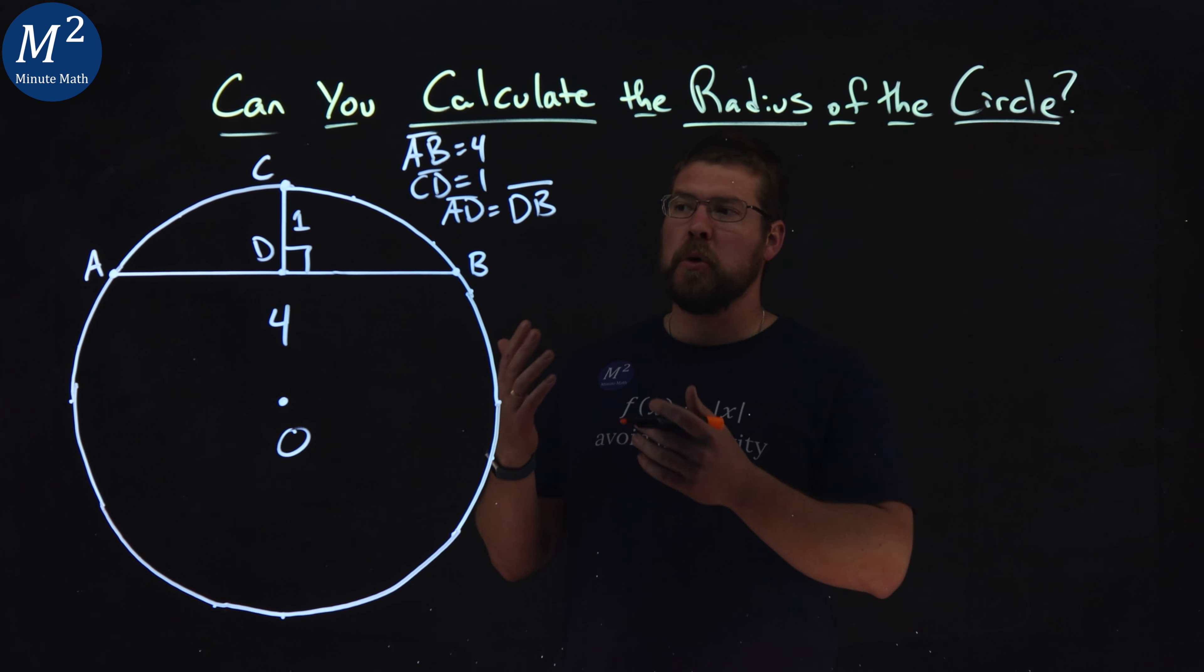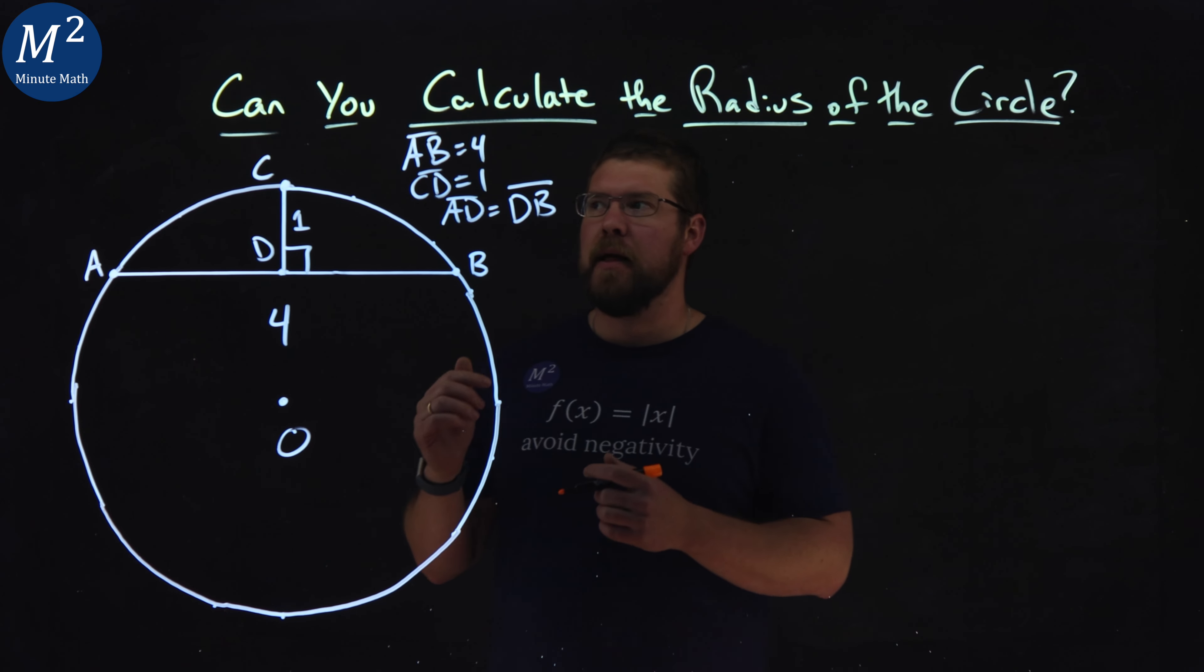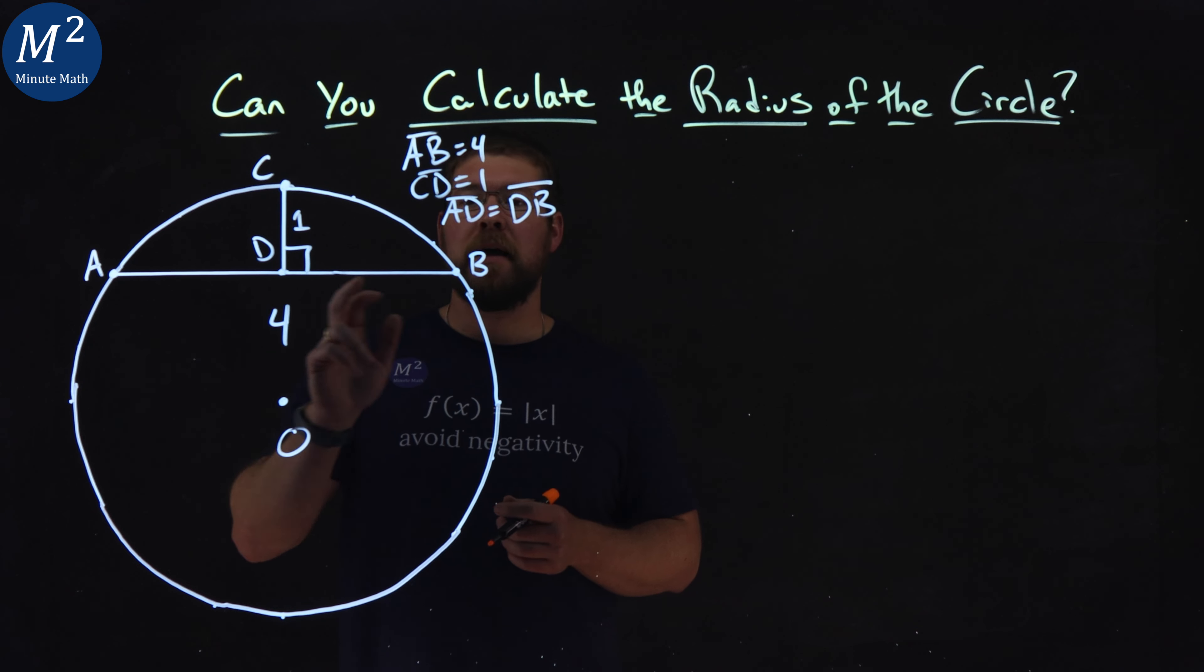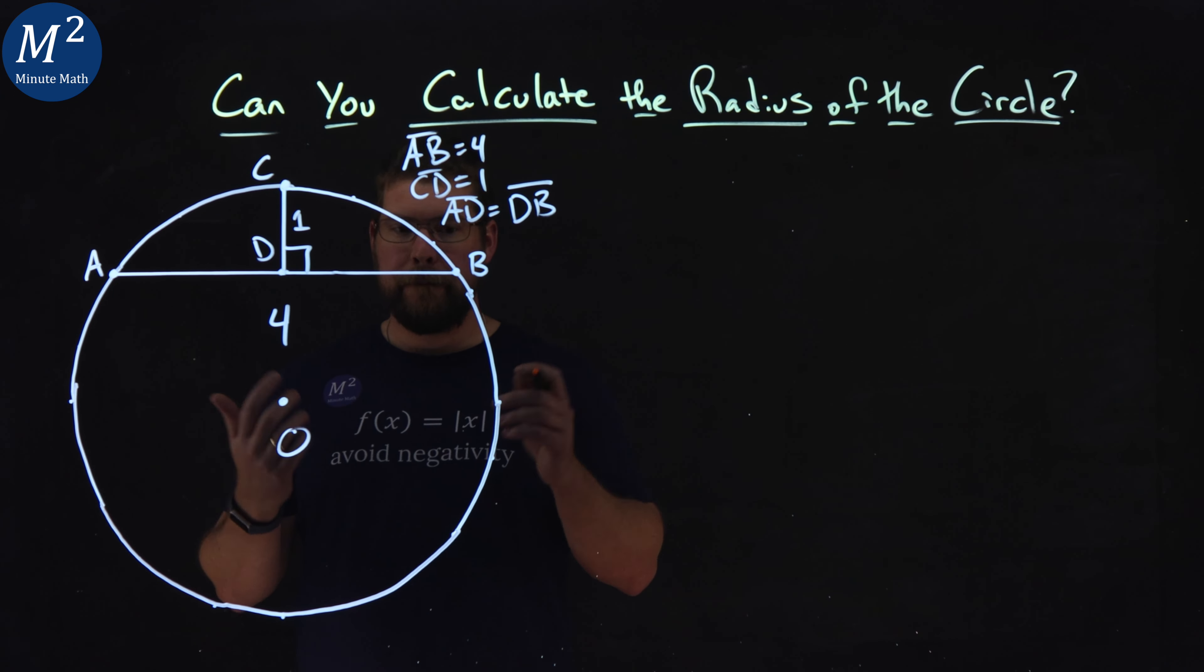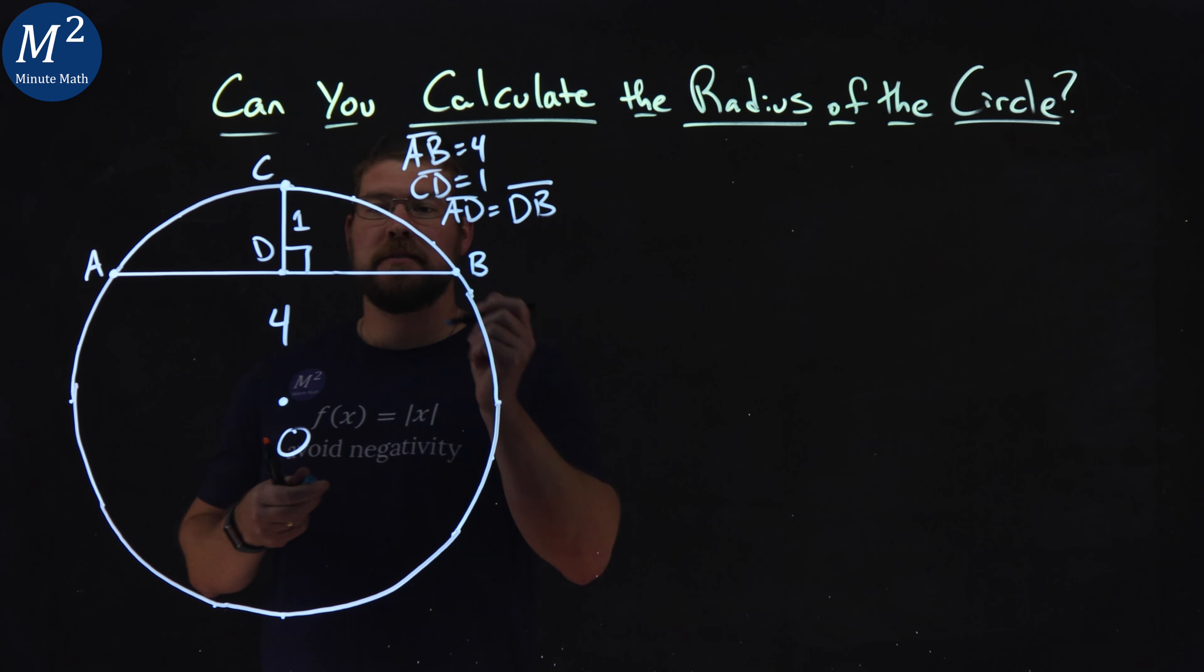We got a few clues to help us out here. They tell us that AB, that length is 4. CD has a length of 1 here. And AD is equal to DB.